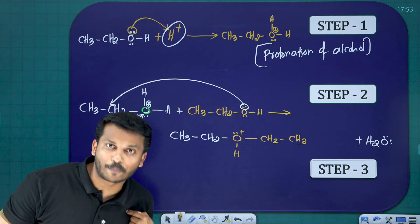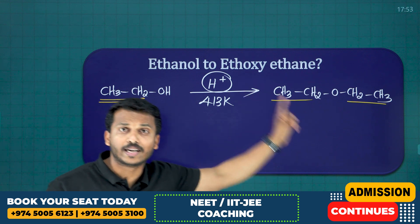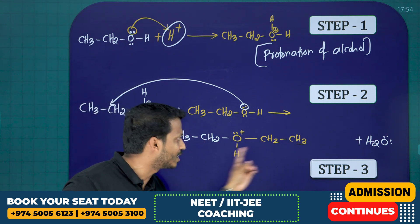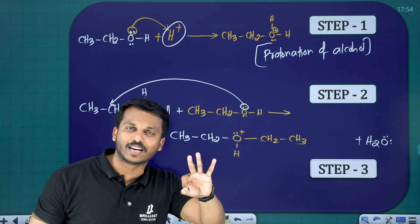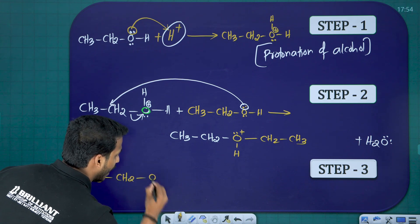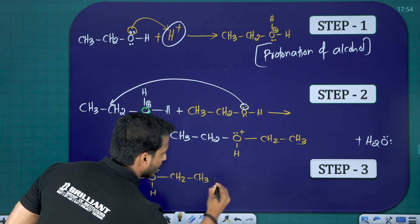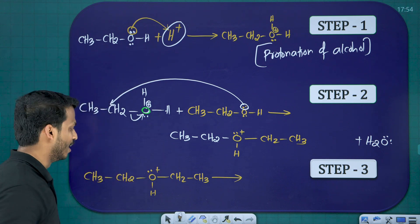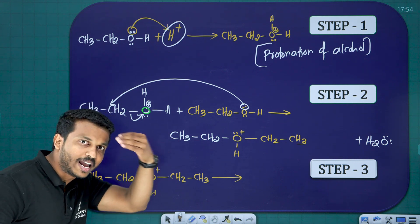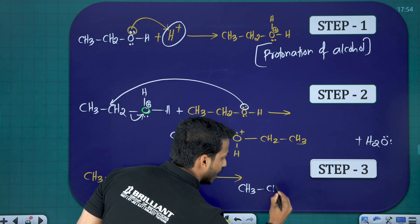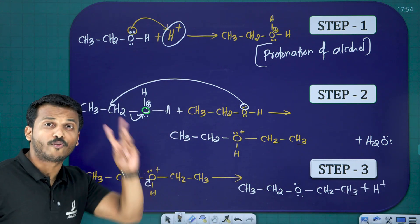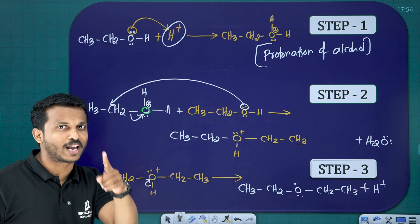In step number three, our desired product is ethoxyethane: CH3CH2-O-CH2CH3. We can see there is one extra H remaining on the oxygen with a positive charge. As with all three mechanisms, removal of H+ is the last step. The H gives its electron back to oxygen and leaves as H+. The product is CH3CH2-O-CH2CH3 — ethoxyethane. This last step is called deprotonation.